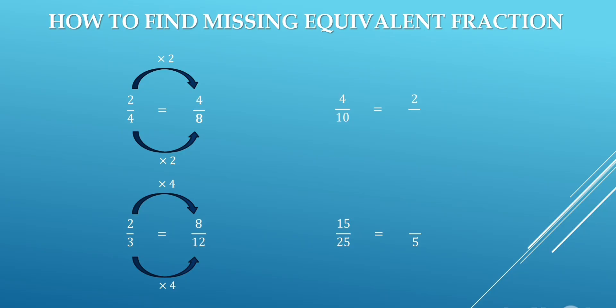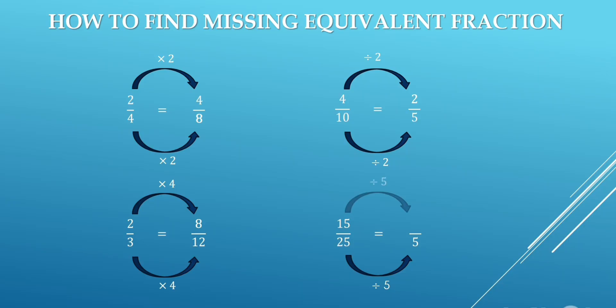In this question, on the right-hand side, the numerator is reducing. So here, 4 is divided by 2 and the answer is 2. Similarly, in the denominator, we will divide 10 by 2; the answer will be 5. In this question, the denominator is also reducing. So 25 is divided by 5; the answer is 5. Similarly, in the numerator, we will divide 15 by 5; the answer will be 3.